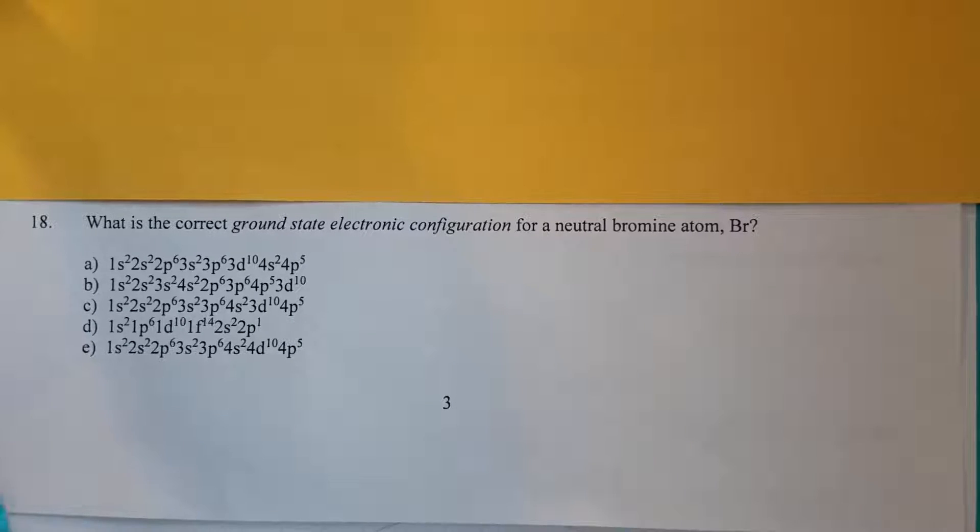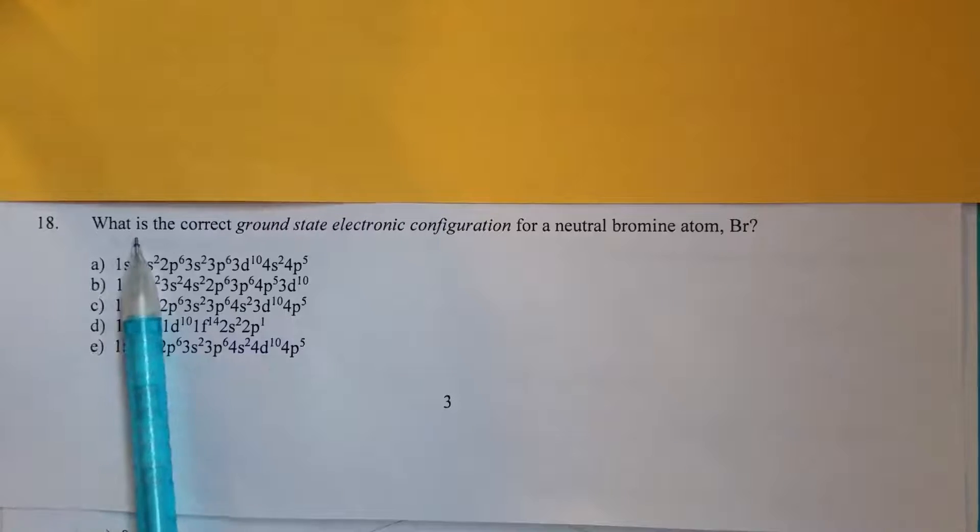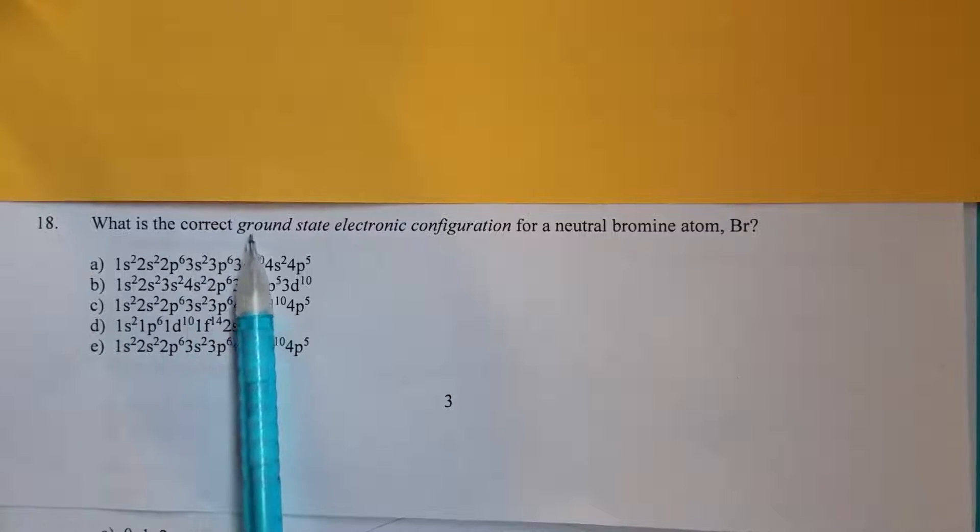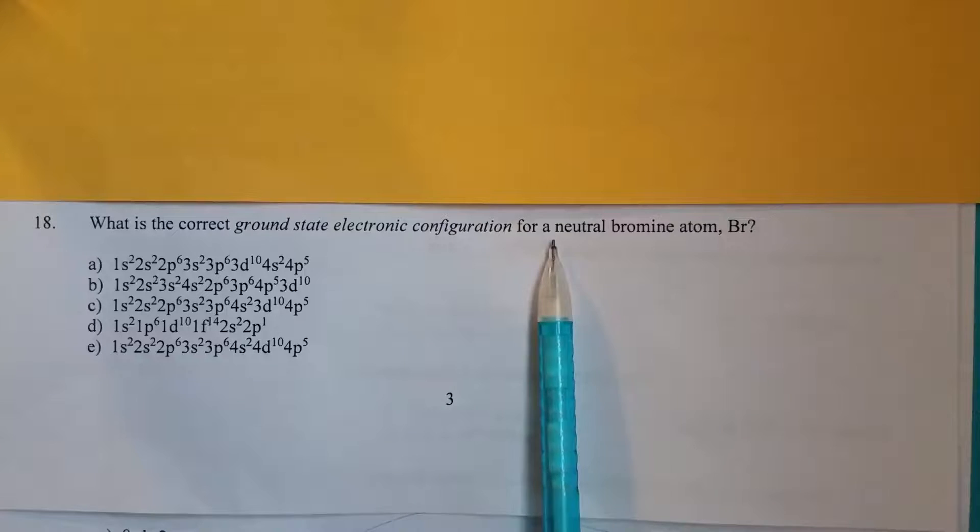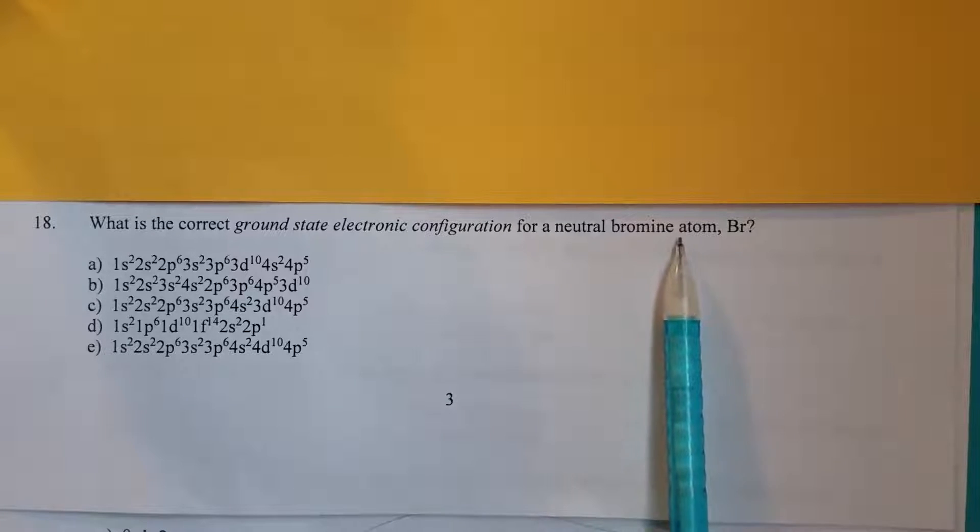Practice Exam 3, question number 18. What is the correct ground state electronic configuration for a neutral bromine atom?